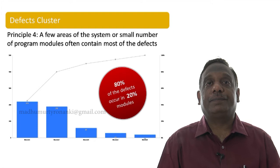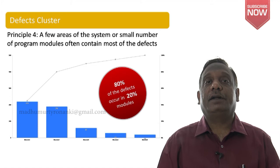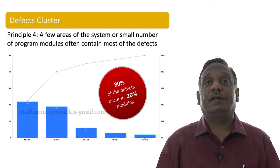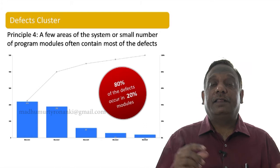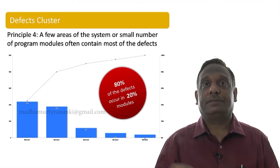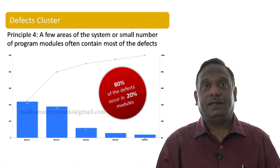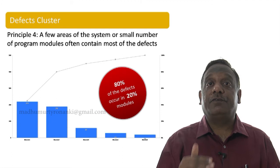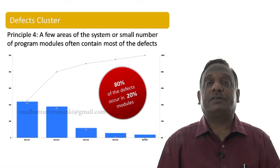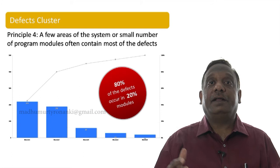This is our fourth testing principle. How do we use it in our day-to-day lives as professional testers? We can restate it as: the more defects you find, the more defects there are. For example, say you are in charge of testing release two of a software with five modules and you are doing a system test.